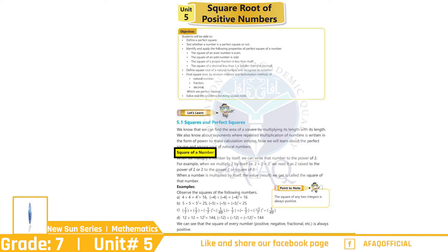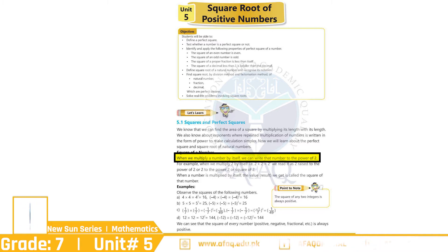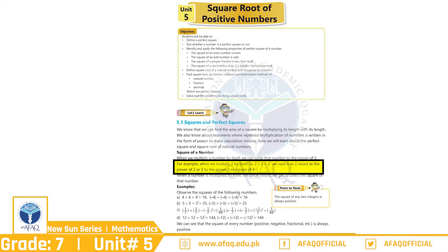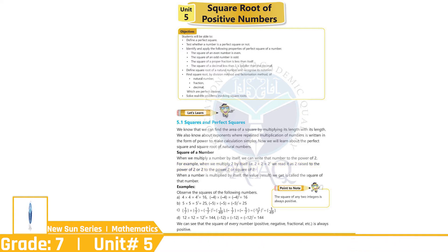Square of a Number. بچو جب ہم کسی نمبر کو خود سے multiply کرتے ہیں تو ہم اس نمبر کا Power of 2 لکھتے ہیں، جیسا کہ 3 multiply by 3 equals 3 to the power 2، یا 3 raised to the power 2، یا Square of 3.